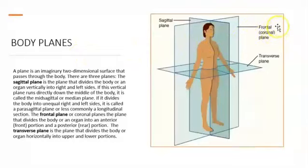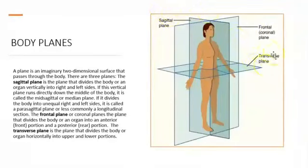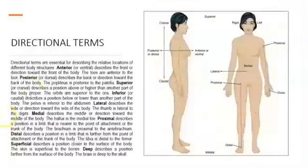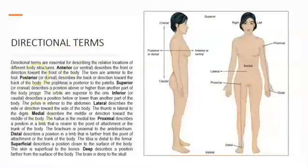For example, the frontal plane divides the body into anterior and posterior. The sagittal plane cuts the body into left and right. The transverse plane cuts the body into superior and inferior. All of these are going to be considered directional terms, such as ventral, dorsal, anterior, and posterior.